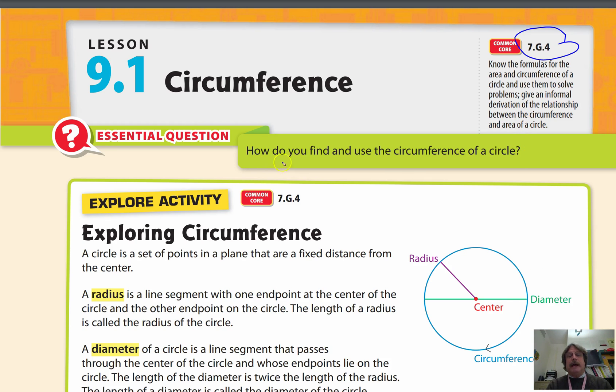The essential question is, how do you find and use the circumference of a circle? They remind us of some of the points that we have to talk about, a radius. The radius is the piece that goes from here, from the circumference to the center. The diameter goes all the way across.